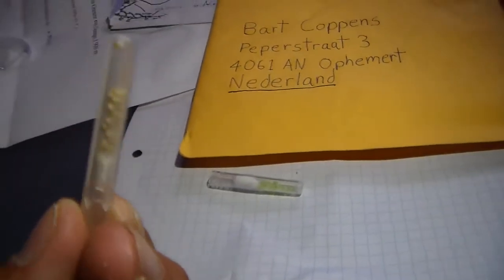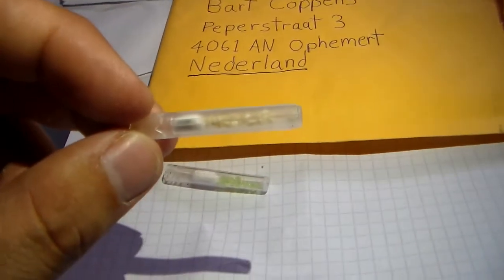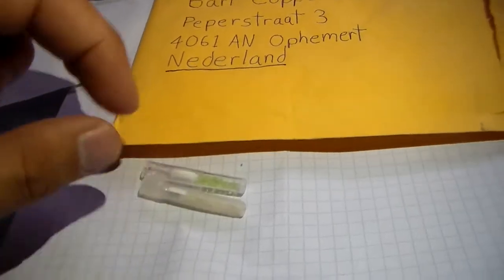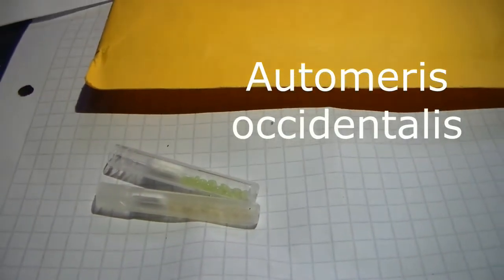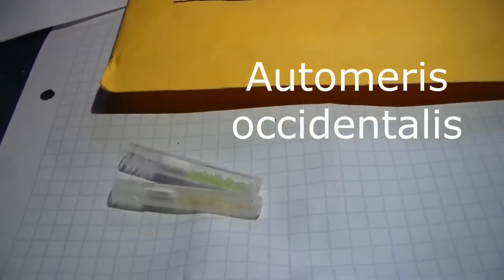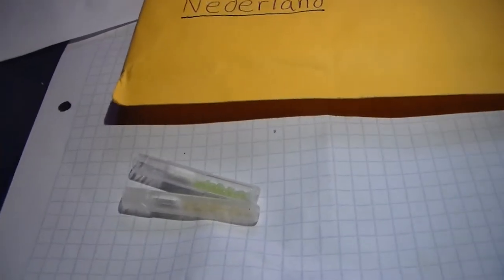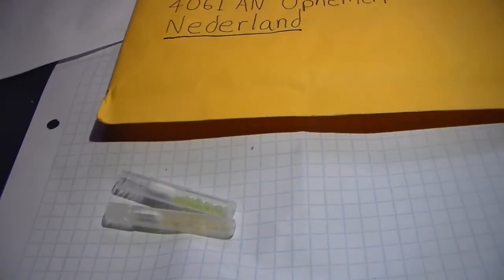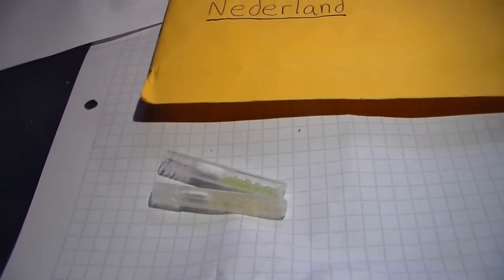Secondly, we have eggs of a rare Automerus species. This species only lives in Mexico and nowhere else in the world. It's Automerus occidentalis, which is quite unique and not many people have bred it before. I really hope they make it, because that will be some very interesting study material - both to enjoy the beauty and for scientific purposes, since not a lot is known about its biology.